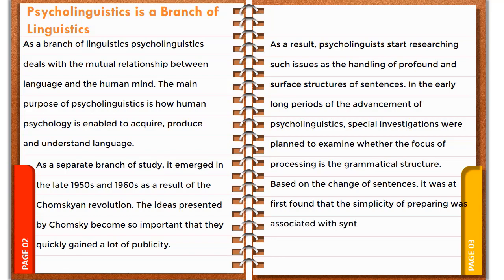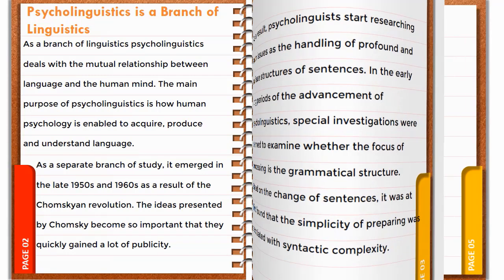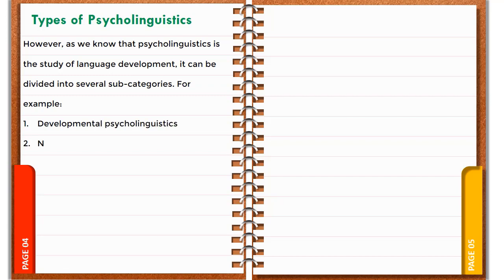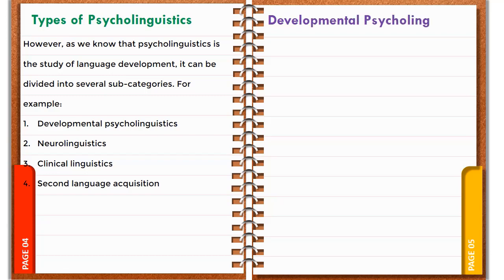Types of psycholinguistics: since psycholinguistics is the study of language development, it can be divided into several subcategories — for example: one, developmental psycholinguistics; two, neurolinguistics; three, clinical linguistics; and four, second language acquisition.